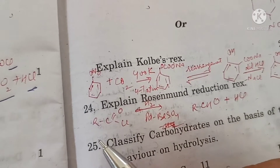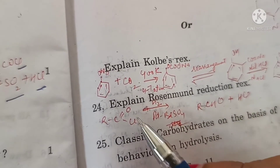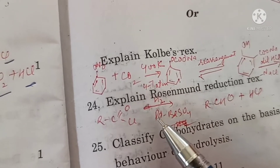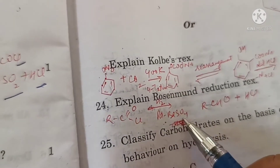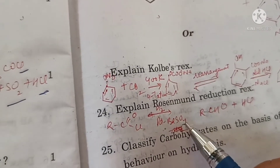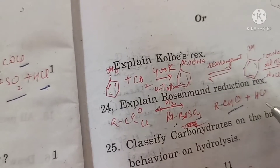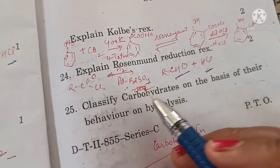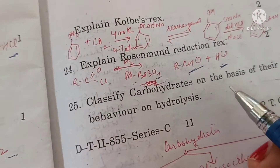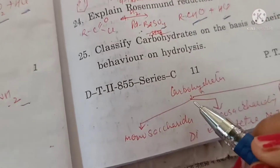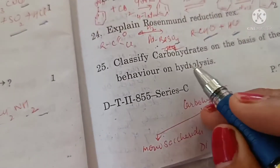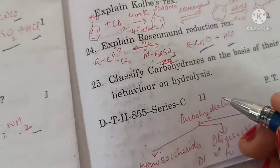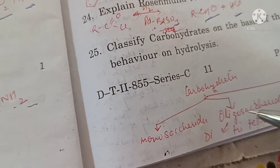Explain Rosenmund's reduction. When any alkanoyl chloride is reduced with hydrogen in presence of palladium supported over barium sulfate, an aldehyde is formed and HCl is released. Classify carbohydrates on the basis of hydrolysis.